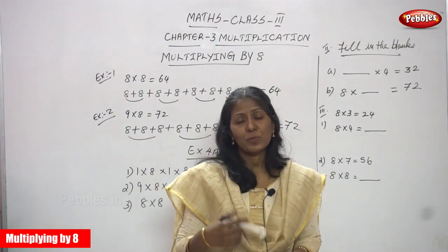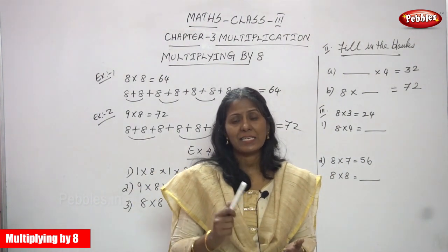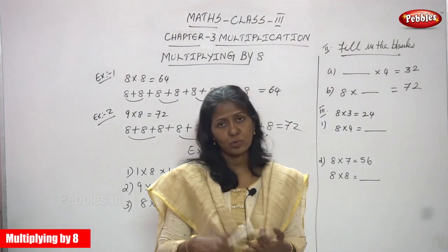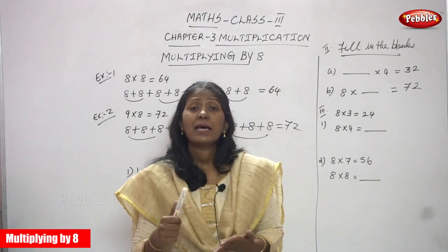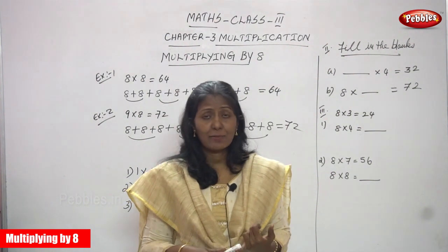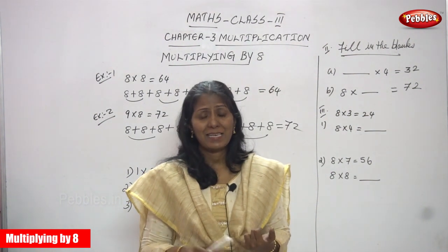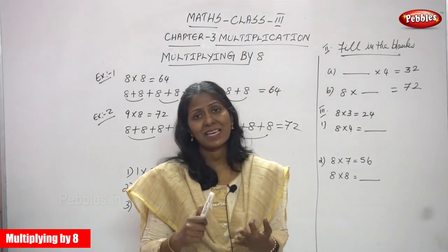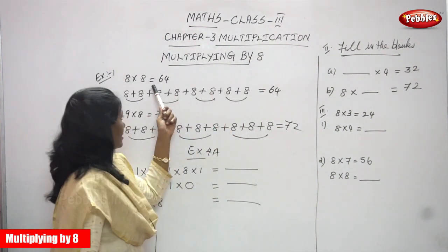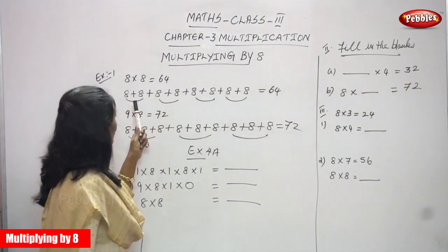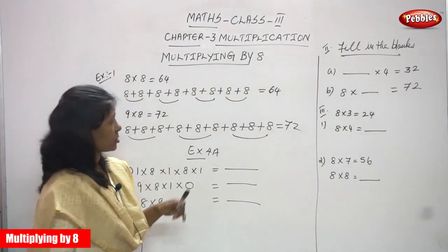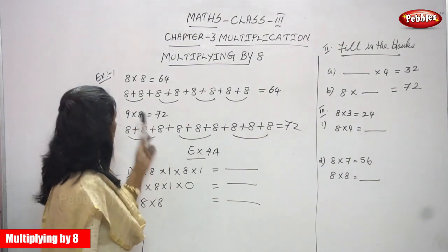You must say the 8th table: 8 ones are 8, 8 twos are 16, 8 threes are 24, 8 fours are 32, 8 fives are 40, 8 sixes are 48, 8 sevens are 56, 8 eights are 64. That is what I have written here. So this is the repeated addition method — you must use the addition method.